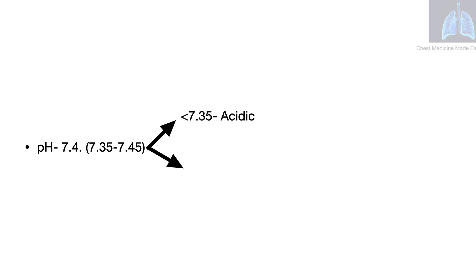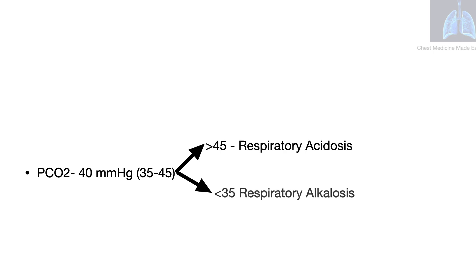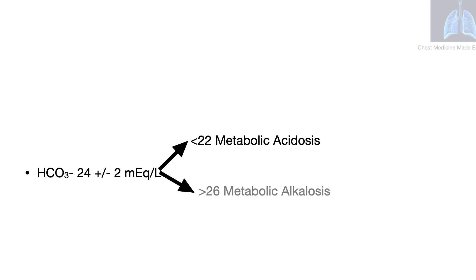If the pH is less than 7.35, it is considered to be acidic, and if the pH is more than 7.45, it is alkaline. When the pCO2 is more than 45, it is a respiratory acidosis, and when the pCO2 is less than 35, it is a respiratory alkalosis. When the bicarbonate is less than 22, it is a metabolic acidosis. When the bicarbonate is more than 26, it is a metabolic alkalosis.